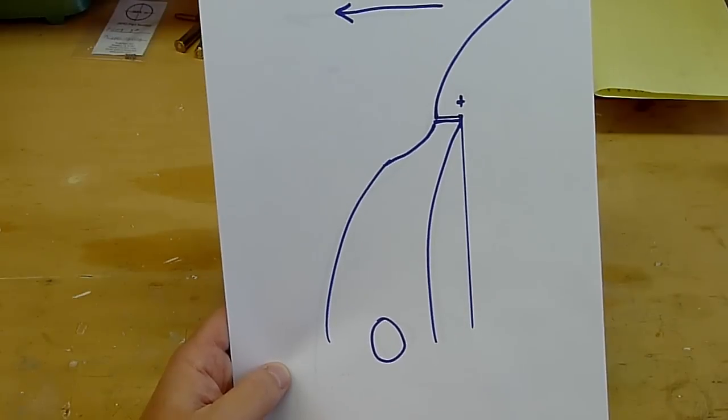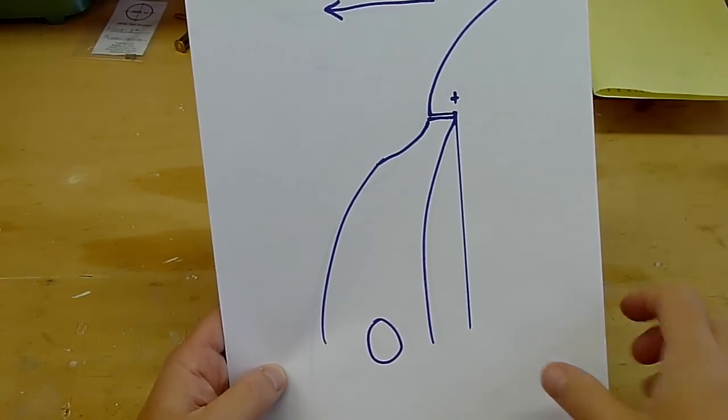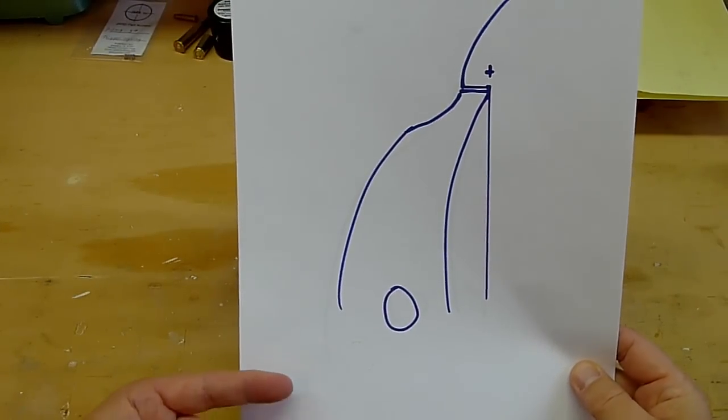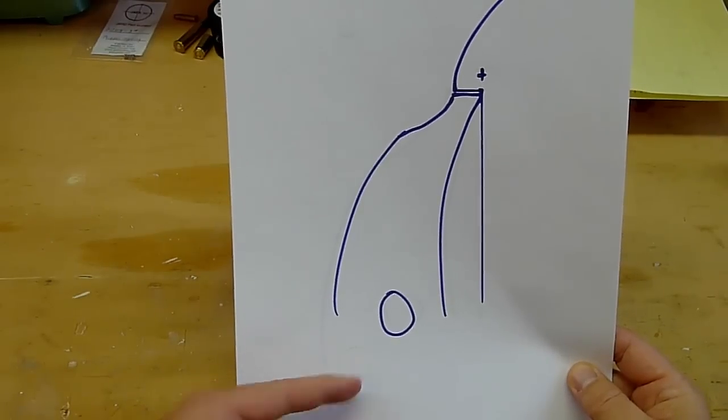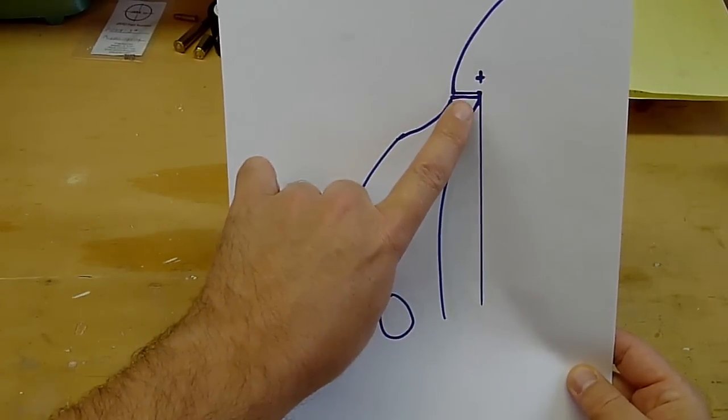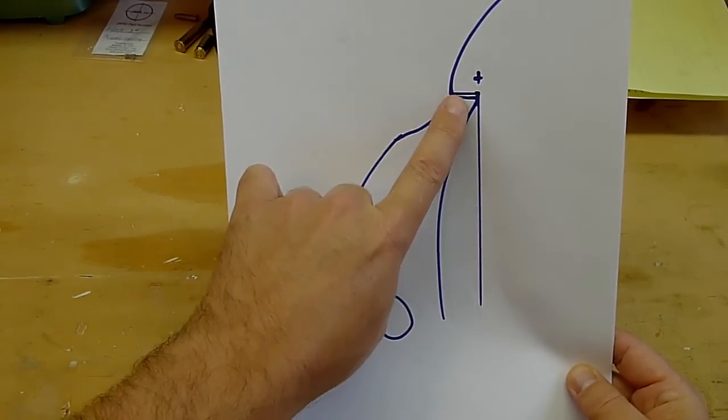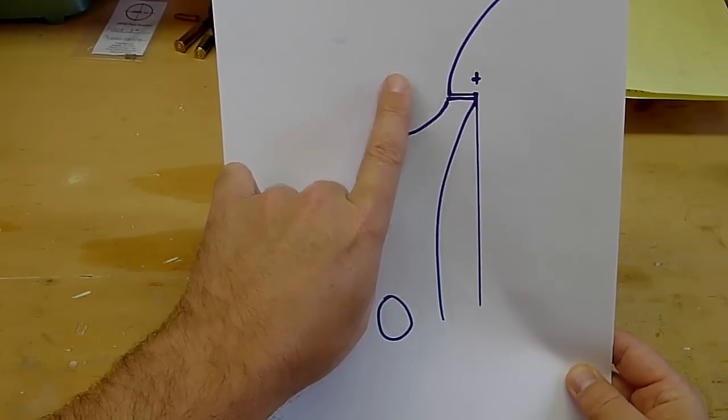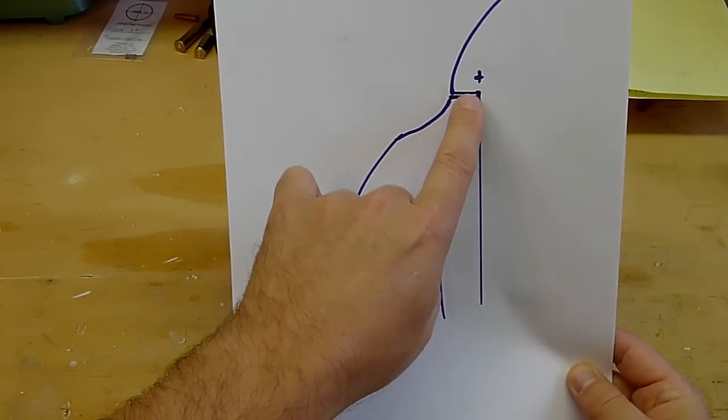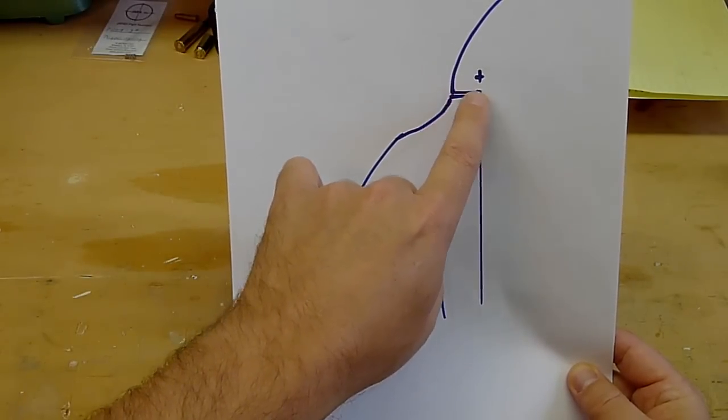When you pull the trigger, it pushes this direction on the bottom of the sear. It pivots here, so that pushes the nose of the sear out this direction, out from underneath the hammer hooks, which are just these things right here.